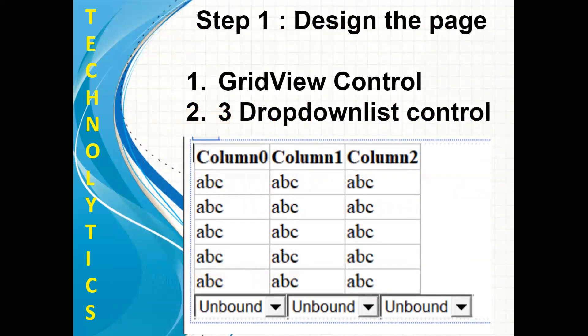Now let's understand the connectivity program step by step. Step one: design the page. In our page, I have created one grid view and three drop-down list controls. In the grid view, I can see all the attributes of my XML document. In each drop-down list, I will bind one attribute of my XML database.